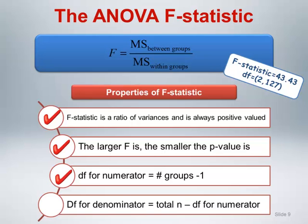Degrees of freedom for the numerator is equal to the number of groups minus 1. Degrees of freedom for the denominator is equal to the total sample size minus the degrees of freedom for the numerator.